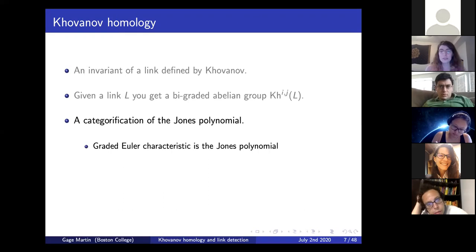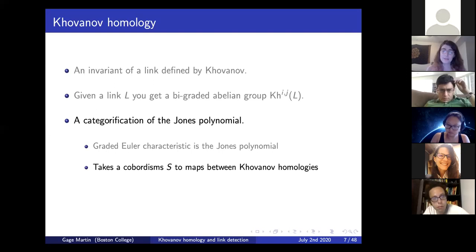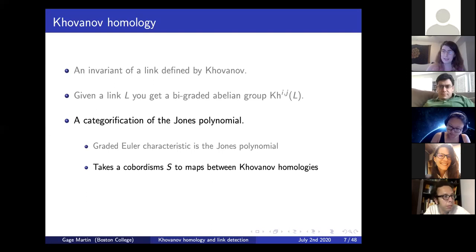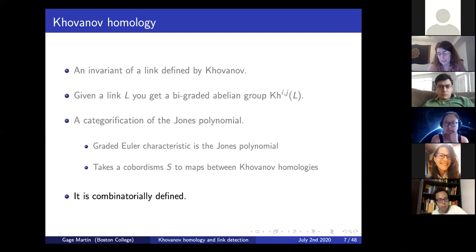To a low-dimensional topologist, being a categorification means two things. First, if you take the graded Euler characteristic of the Khovanov homology, you recover the Jones polynomial. Second, if you have a cobordism between two links—a surface with one link on one boundary side and the other link on the other—that should induce a map between their Khovanov homologies. There's also a combinatorial definition: you follow basic rules to take a picture of your knot and construct a chain complex whose homology is the Khovanov homology.